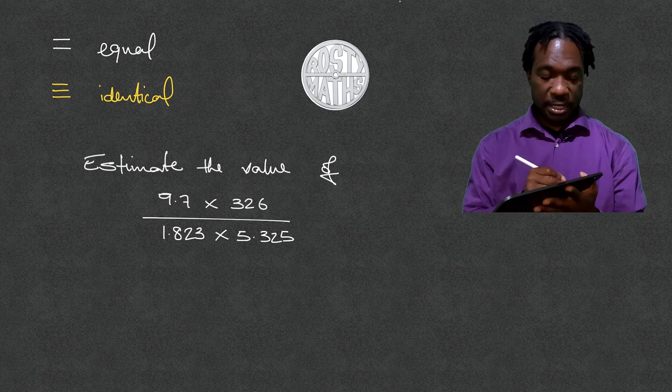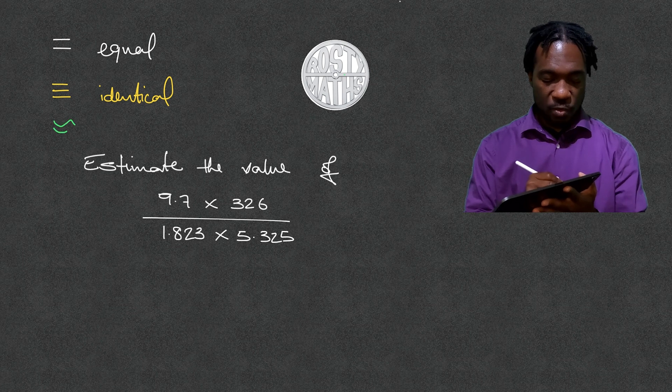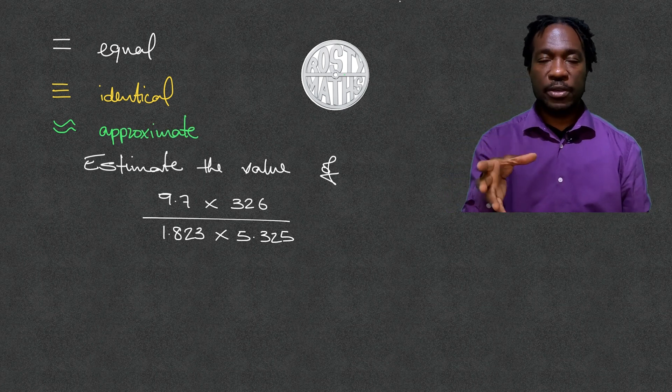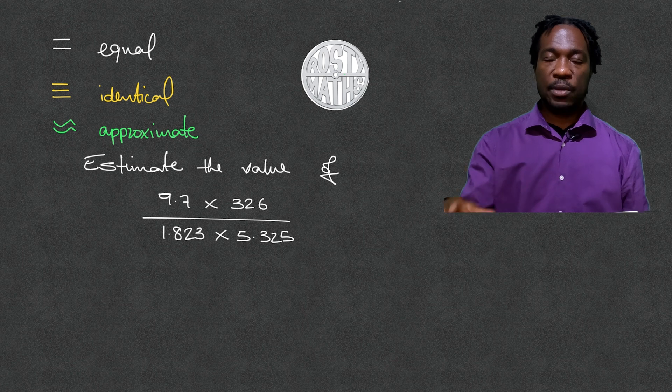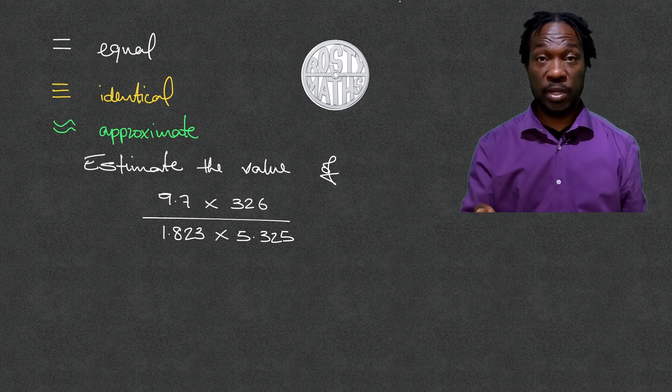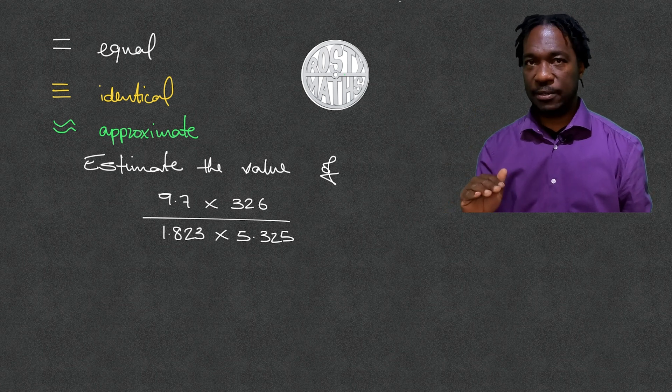The one we're going to use today is a wavy equal sign, which means approximate. That's the one we're going to be using because we're going to be doing some rounding. And when we round, we're no longer looking at exact answers. We're looking at approximate answers the minute you start rounding.